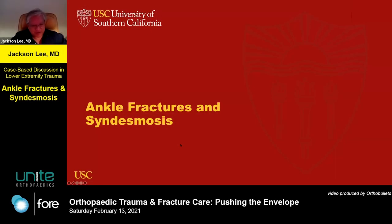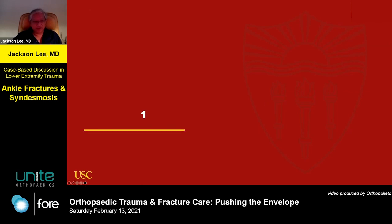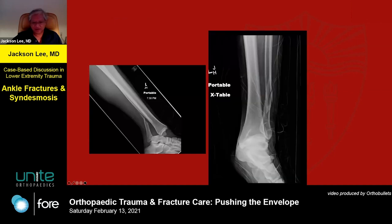I'm going to start off this morning with some ankle fractures and some examples of adventures with the syndesmosis. We'll start off with a relatively straightforward case — a 25-year-old gentleman who presents to our emergency room. This is a closed injury, and as you can see, it's an ankle fracture-dislocation which appears to have a fibular fracture and probably some injury on the medial side.